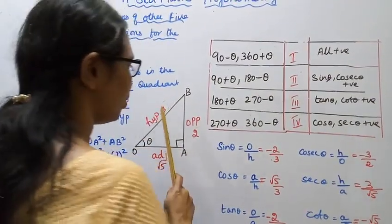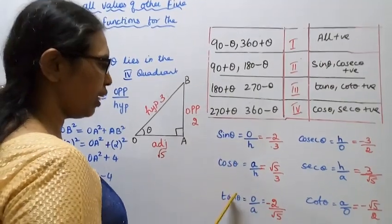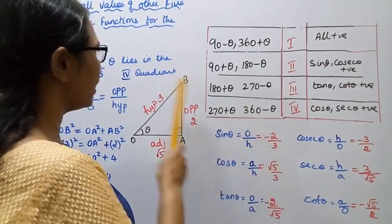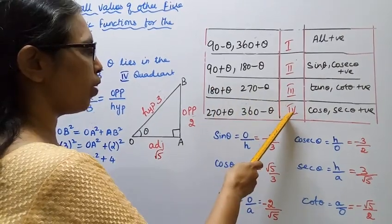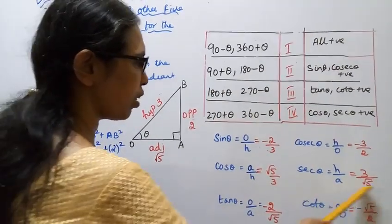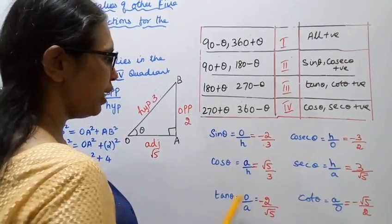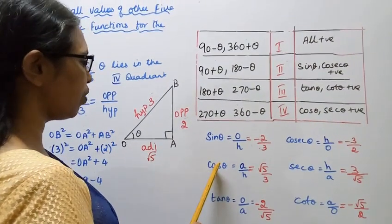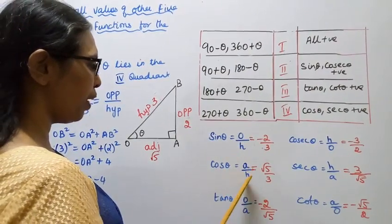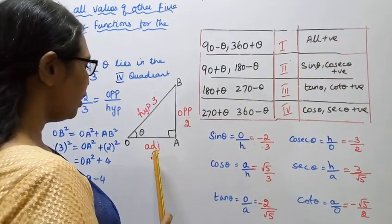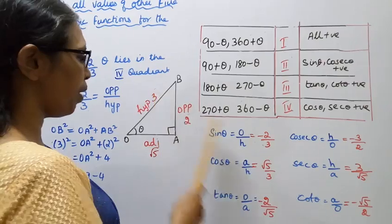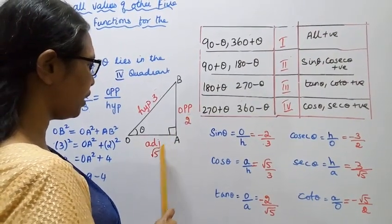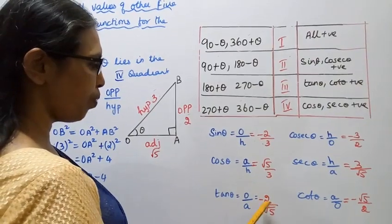With opposite equals 2, adjacent equals root 5, hypotenuse equals 3: sin theta equals minus 2 by 3, cos theta equals adjacent by hypotenuse equals root 5 by 3, tan theta equals opposite by adjacent equals minus 2 by root 5.